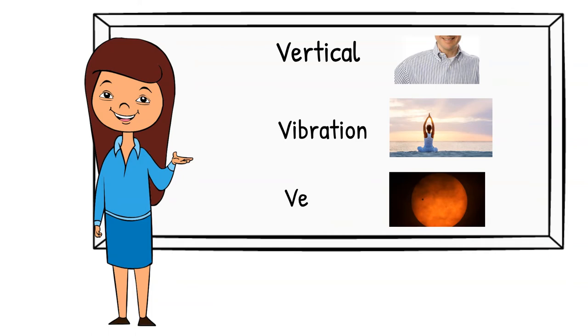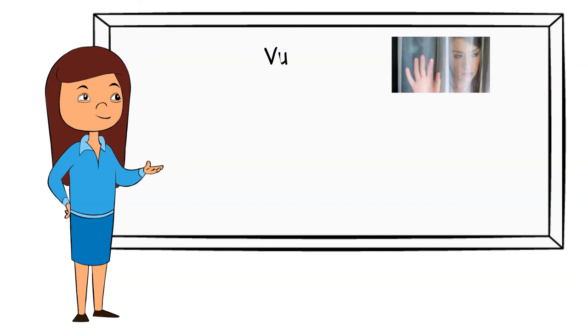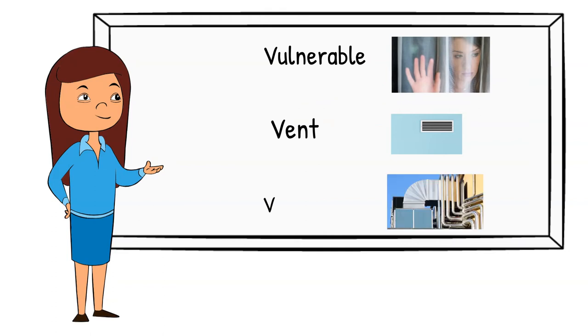Venus. A planet in our solar system. Vulnerable. Being weak or in a negative state, sad state, where someone might take advantage of you. Vent. Like an air conditioner, something that puts out air. Ventilation. This is a picture of a ventilation system for a large building. Circulates the air and keeps us safe.